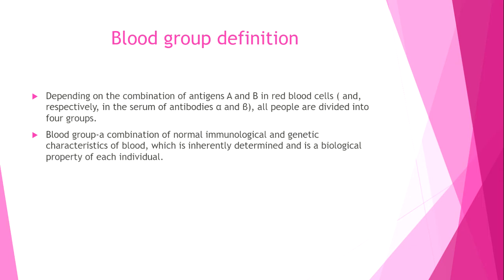What is a blood group? Dependent on the combination of antigens A and B in the red blood cells and, respectively, antibodies alpha and beta in the serum, all people are divided into four groups. Blood groups are a combination of normal immunological and genetic characteristics of blood that are innately determined — a biological property of each individual. Our blood type is given from birth, or even from embryonic development, and blood group does not change over time.